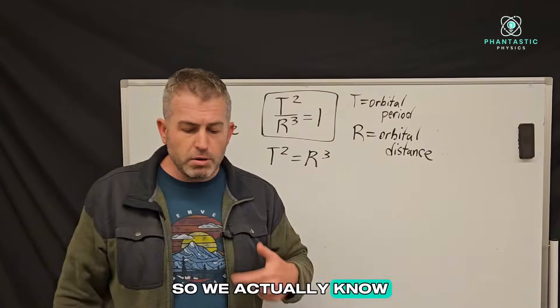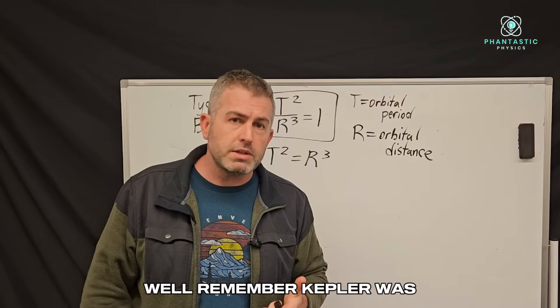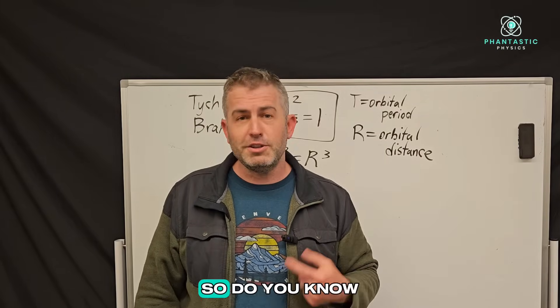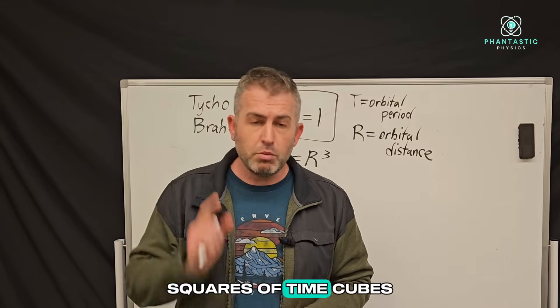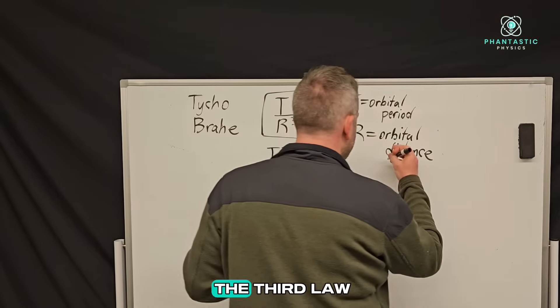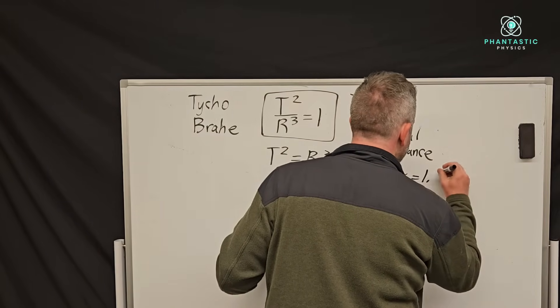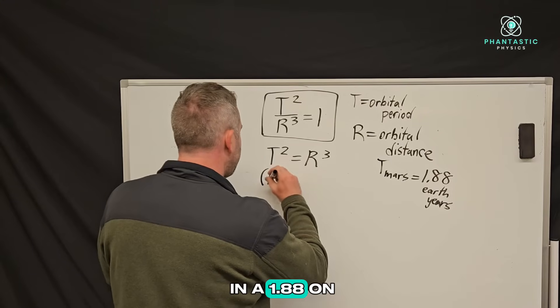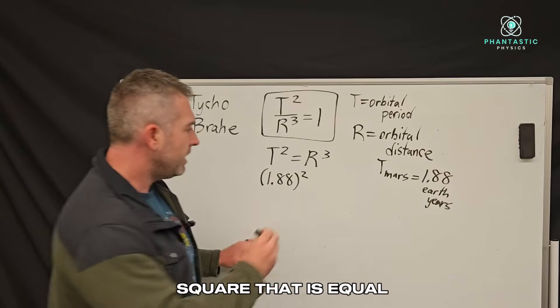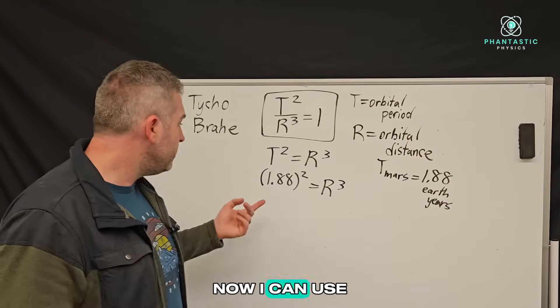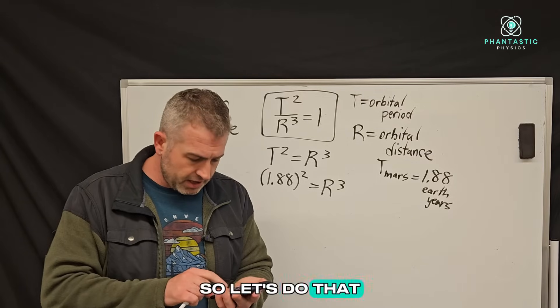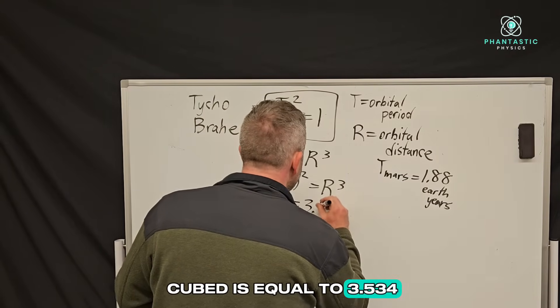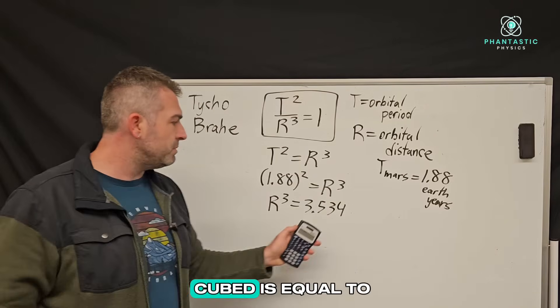T squared. So we actually know T from Mars. How did we figure it out? Well, remember, Kepler was observing Mars for many years. So he watched Mars carefully and figured out how many Earth years it took to go around the sun. It takes approximately 1.88 Earth years. So T for Mars happens to be 1.88 Earth years. And so that means for our equation, I'm going to plug in a 1.88 on this side, and we have to square that as equal to R cubed. Now I can use my calculator to figure out what 1.88 squared is. And we get 3.534. So we have R cubed is equal to 3.534.